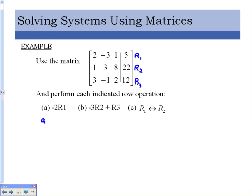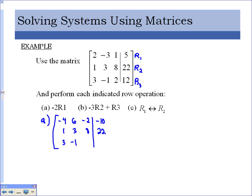Starting with Part A: if I want to take row 1 and multiply it by negative 2, I need to draw my matrix and figure out the new values. Negative 2 times each entry gives negative 4, positive 6, negative 2, and negative 10. Row 1 is the only thing that changed, so everything else we just rewrite — row 2 and row 3 stay the same. That's Part A: it's just negative 2 times row 1.